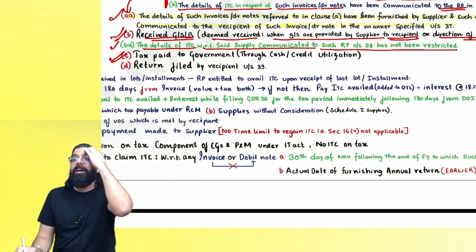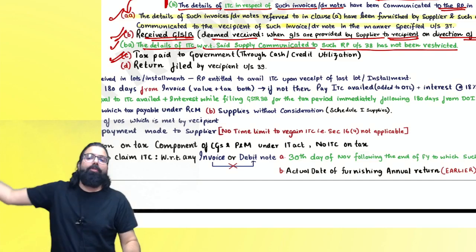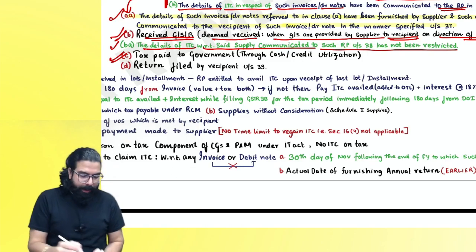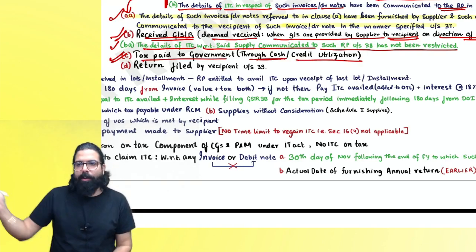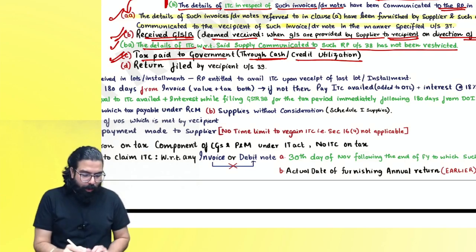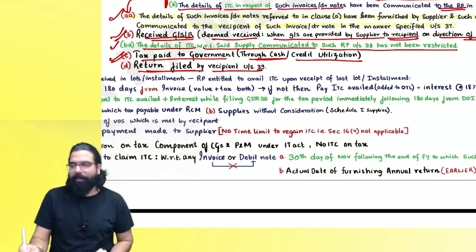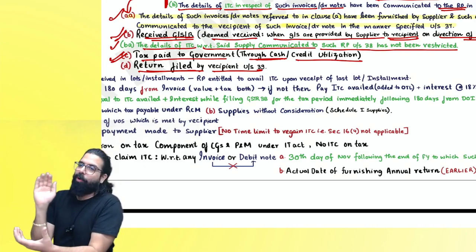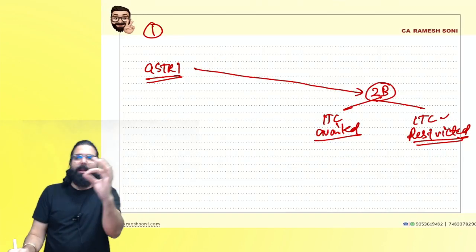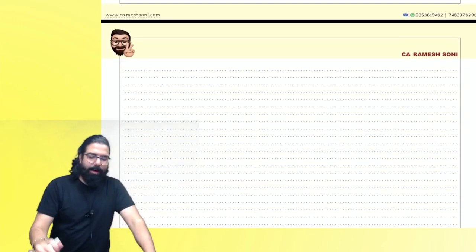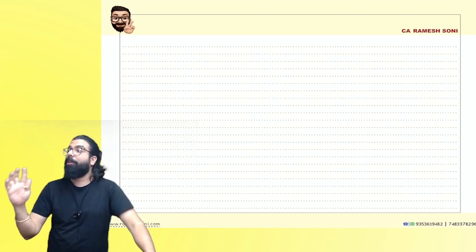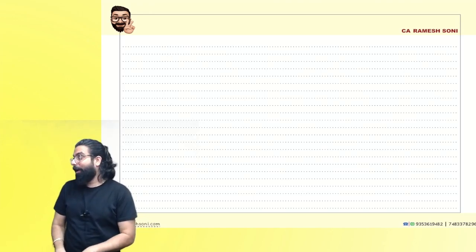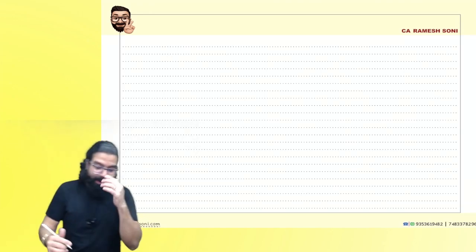Clause (c): Tax should be paid to the government — supplier must have paid, whether through cash or using his own credit. Clause (d): Return should be filed by the recipient — you file your return, only then you will get the credit. Now Section 16(2) conditions: A (document), AA (GSTR-2B), BA (not restricted), B (received), C (tax paid), D (return filed).